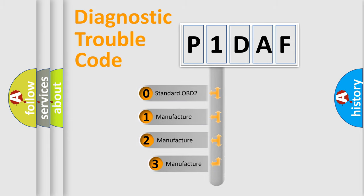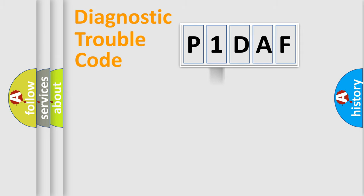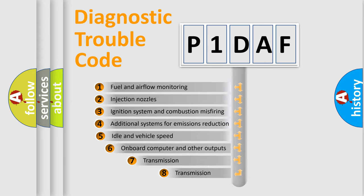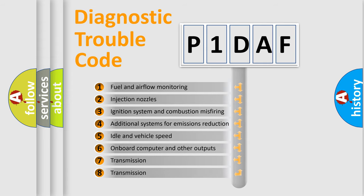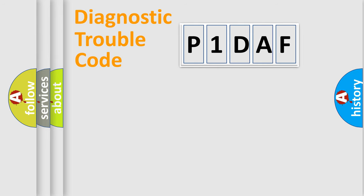If the second character is expressed as zero, it is a standardized error. In the case of numbers 1, 2, or 3, it is a manufacturer-specific expression of the car-specific error. The third character specifies a subset of errors. The distribution shown is valid only for the standardized DTC code.